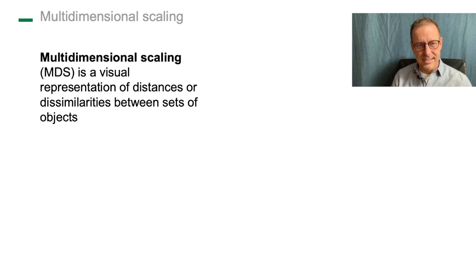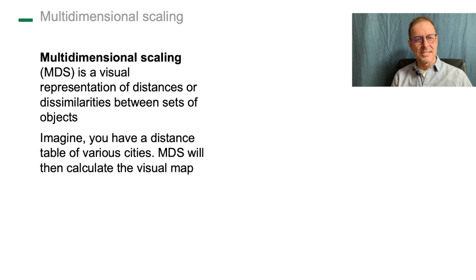The classic textbook example when it comes to multidimensional scaling is that you talk about the distances of cities. This example is not about social science, but it helps us a lot to understand the underlying idea. I will come to a social example later on, but this example really helps us to understand multidimensional scaling.